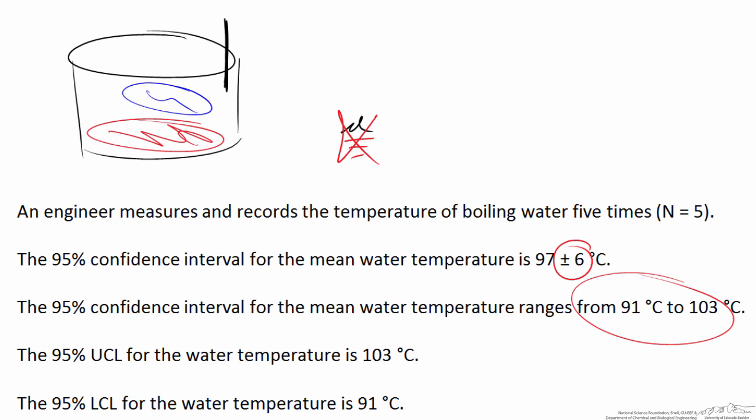But what does it mean? I mean, 95 percent of what? What is the significance of 95 even? And I'll tell you what it doesn't mean. It's a common misconception that it means that 95 percent of the measurements will fall between the range 91 degrees C to 103 degrees C, and that's not true at all.